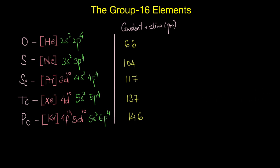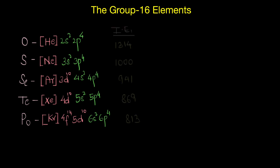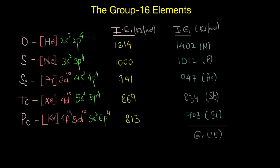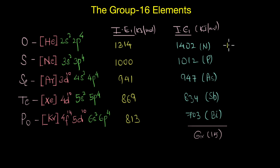But in the case of ionization energy, if you compare these elements with their immediate predecessors — the Group 15 elements — you can see that the ionization enthalpies of Group 16 elements are lower than those of the Group 15 elements, especially for the lighter elements. This can be attributed to the exceptional stability of the half-filled electronic configuration of the Group 15 elements.